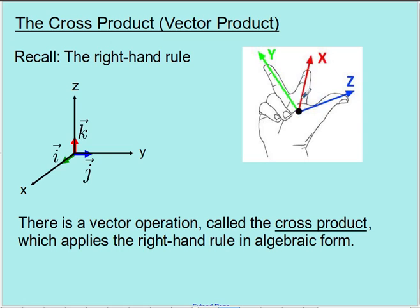I described it by saying you start with your index finger along the X axis, your middle finger along the Y axis, and then your thumb will be pointing along the Z axis. That works in any order. If I take the I vector as my starting vector and the J vector as my second vector — index finger, middle finger — my thumb would be pointing up. I could start with my index finger along J, middle finger along K, and end up with my thumb pointing in the I direction. If I went from K to I, my thumb would point in the J direction. This cyclic nature applies to the right-hand rule in terms of these basis vectors.